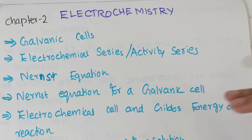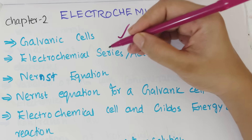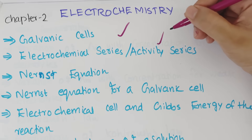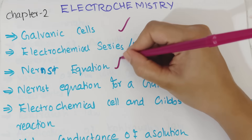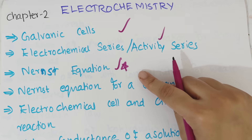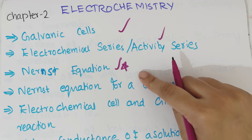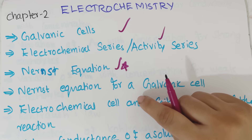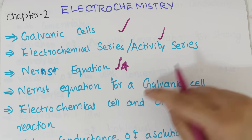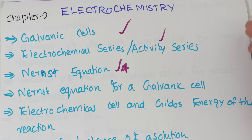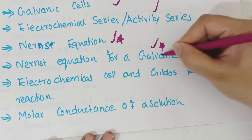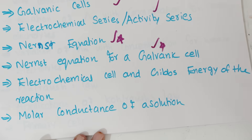The next chapter is electrochemistry. What is a galvanic cell? Electrochemical activity series — what is the difference? Notation of galvanic cells. We have also seen Daniel's cell. That is the notation for galvanic cells — this is an important thing.